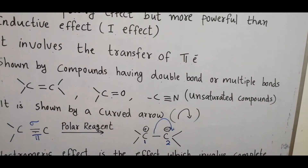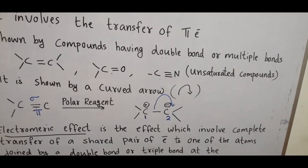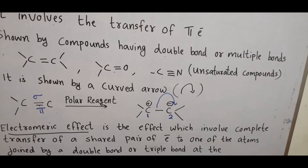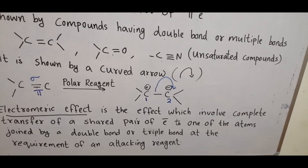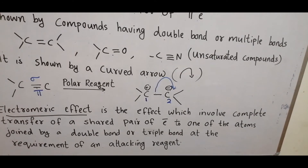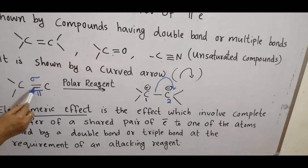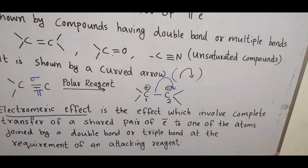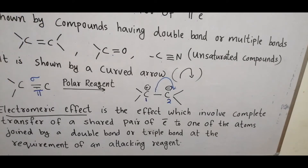Electromeric effect is defined as the effect which involves the complete transfer of a shared pair of electrons to one of the atoms joined by a double bond or multiple bonds, at the requirement of an attacking reagent. So this is a temporary effect — it comes into play only in the presence of an attacking reagent.